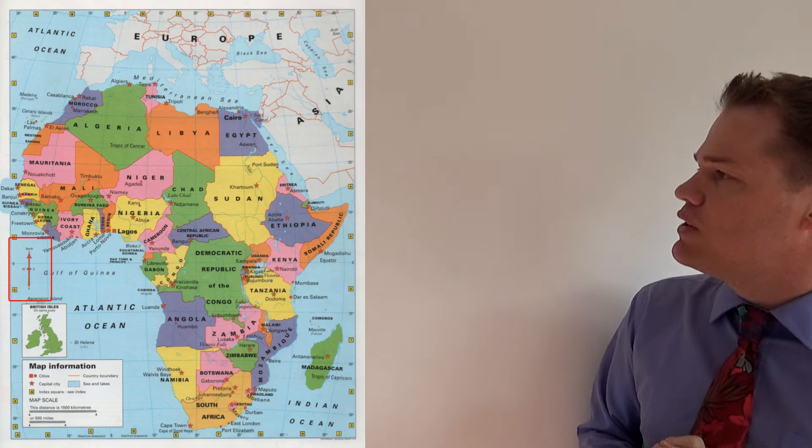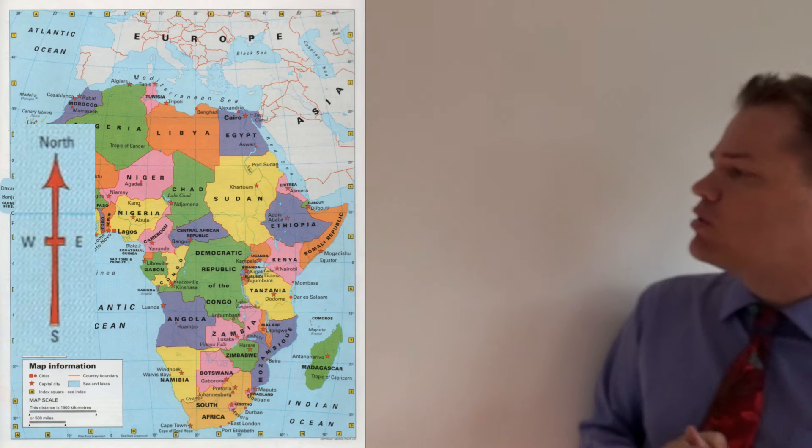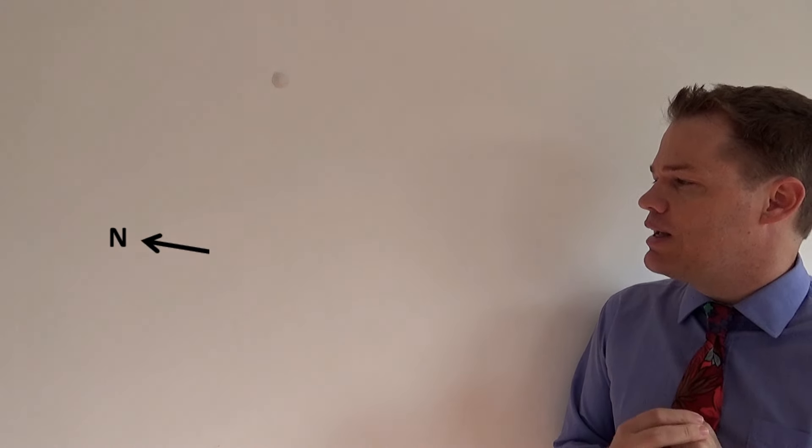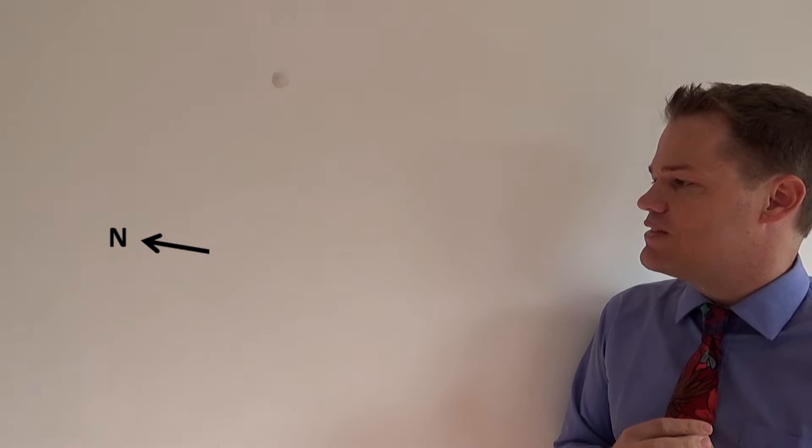When you see a map for the first time, you want to know which area is represented by the map. The next thing we need to know is where is north on the map. For every standard map, north will be at the top. As you can see, north is at the top and south is at the bottom. However, there are exceptions, and when north is not at the top there will be a sign indicating where north is.